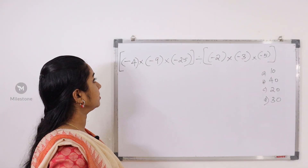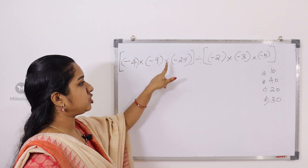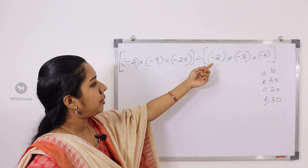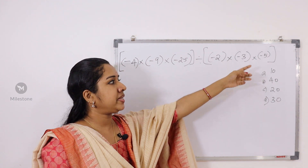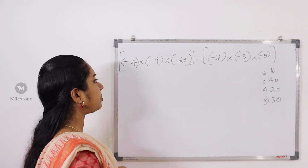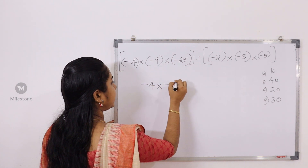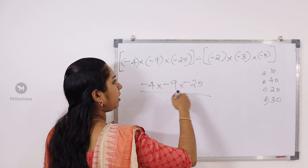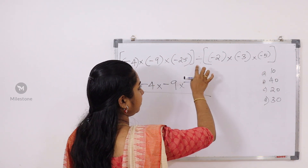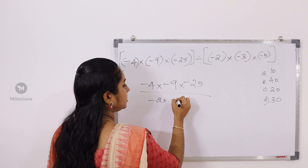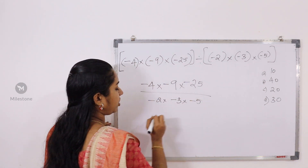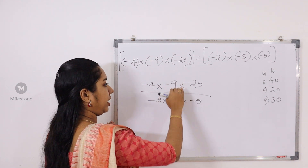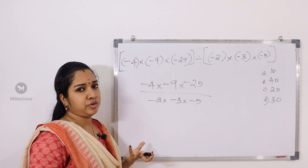Next: minus 4 into minus 9 into minus 25, divided by minus 2 into minus 3 into minus 5. We have 3 minus signs in the numerator and 3 minus signs in the denominator, so you divide the minus signs out, each pair giving positive.